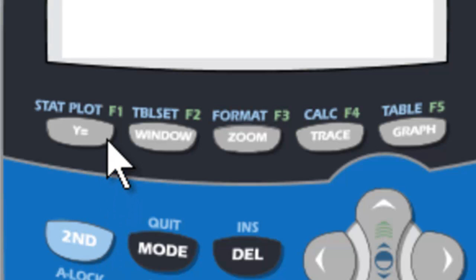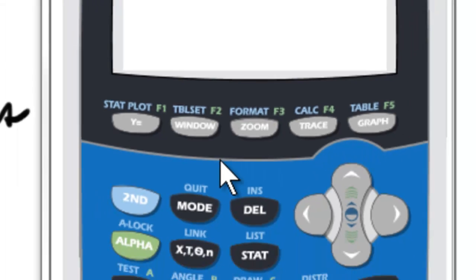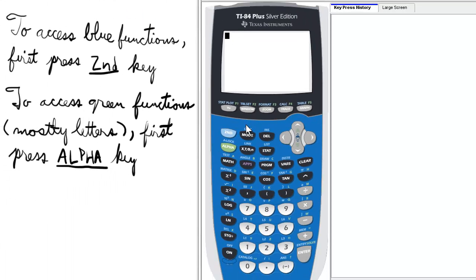One thing you'll notice also is that you have these function keys in green, from F1 on the left to F5 on the right. To access these function keys, press Alpha. The same holds for any of the green functions above the keys on the rest of the calculator keyboard. First press the Alpha key to access those.